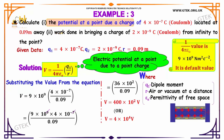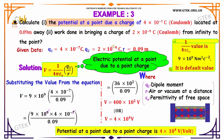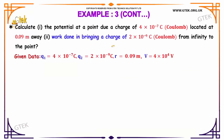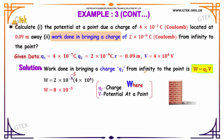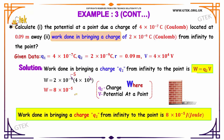Now solving the second part: work done in bringing charge Q2 = 2 into 10 power minus 9 Coulomb from infinity to that point. The potential V was found to be 4 into 10 power 4 Volts. Work done W = Q2 into V = 2 into 10 power minus 9 into 4 into 10 power 4, giving W = 8 into 10 power minus 5 Joule.